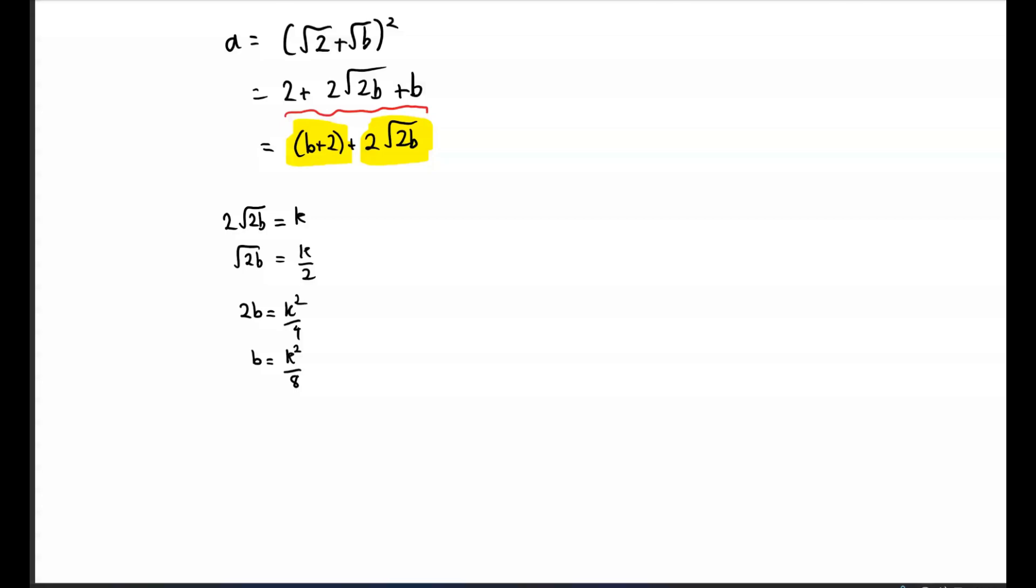Plugging our expression for b into our expression for a, we get a = k²/8 + 2 + 2√(k²/4). Expanding the square root, we get k²/8 + 2 + 2(k/2).